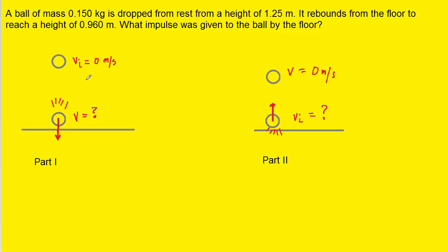Let's first examine part one. In part one, the ball is dropped from rest, as indicated in the question, and it falls until just before it hits the ground with some final velocity. Now because it was dropped from rest, we can say the initial velocity is 0 meters per second. What we need to do is figure out this final velocity of the ball right before it hits the ground.